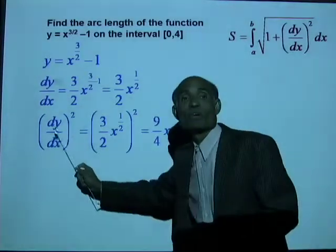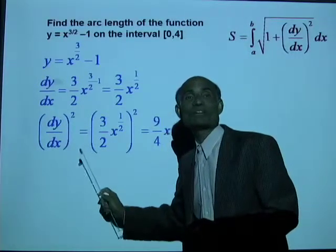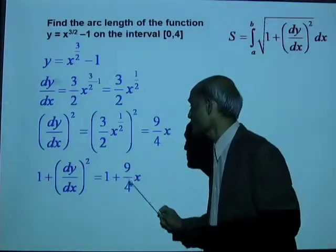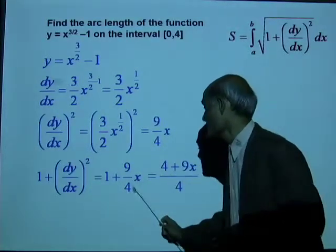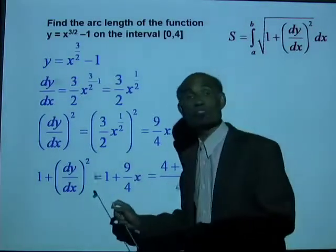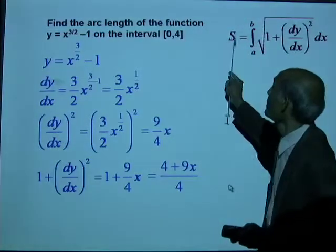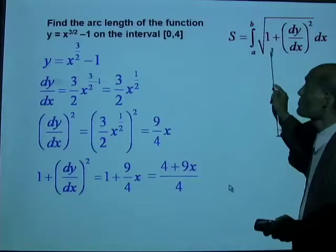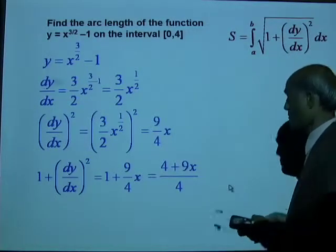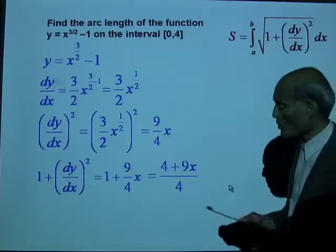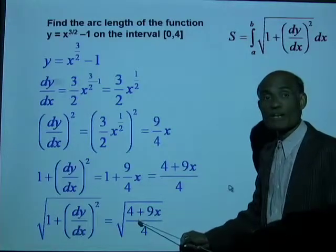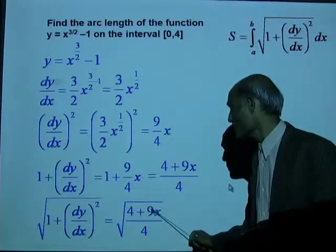Next, 1 + (dy/dx)² = 1 + (9/4)x = (4 + 9x)/4. Taking the square root: √(1 + (dy/dx)²) = √((4 + 9x)/4). We know the limits a = 0 and b = 4, so we can set up the integral. We can split this as √(4 + 9x) / √4 = (1/2)√(4 + 9x), which makes it easier to integrate.